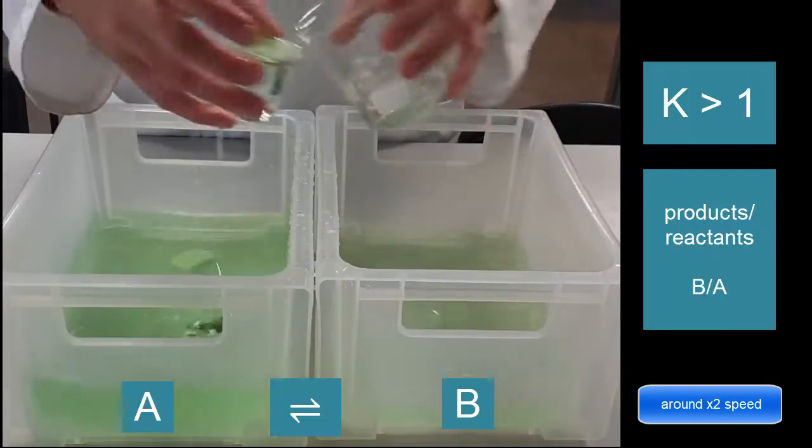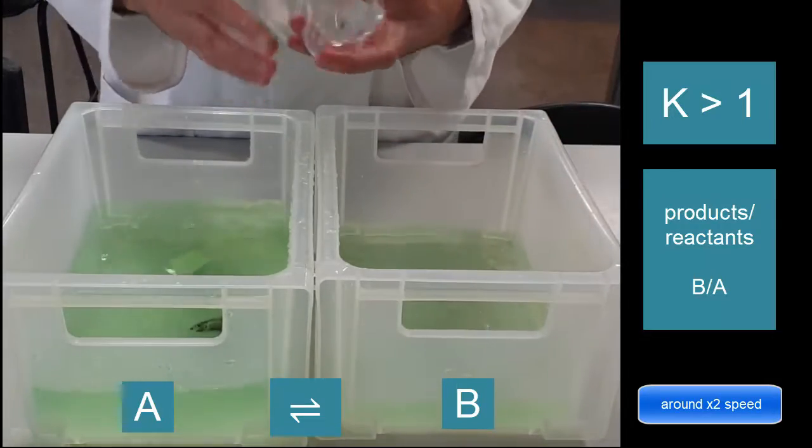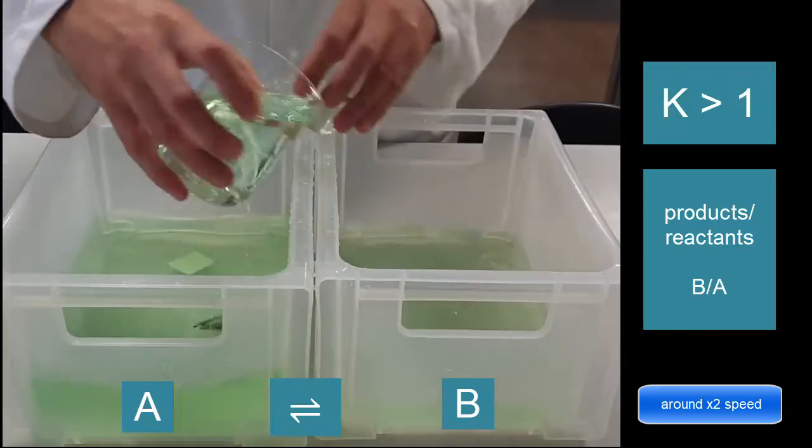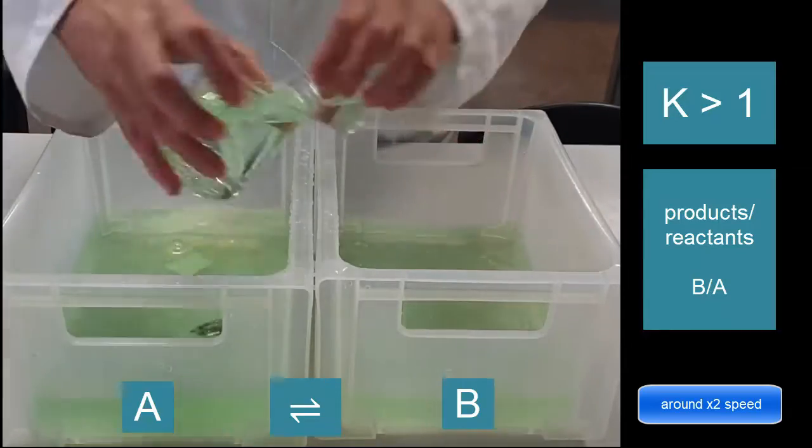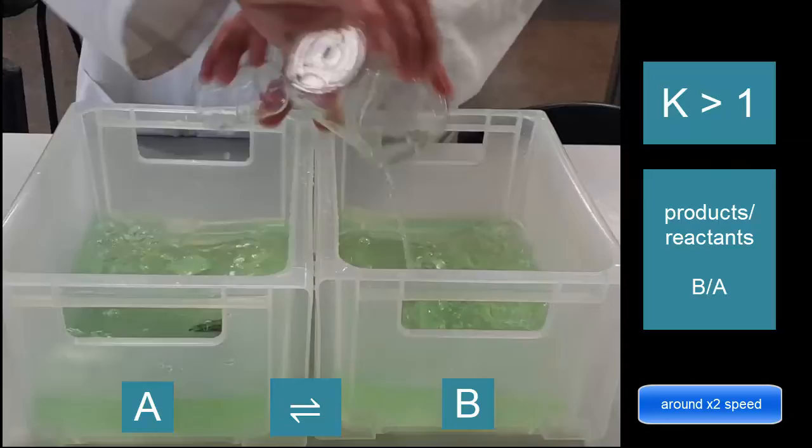Now if I swap it over, now K is greater than 1, you'll see that it will quickly swap around so that there'll be about one-third A and two-thirds B, and it'll stay there no matter how many times I do this.